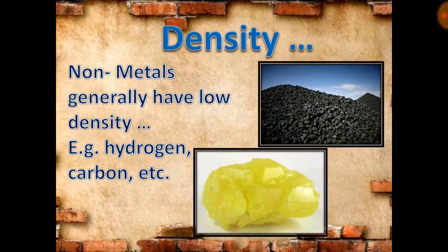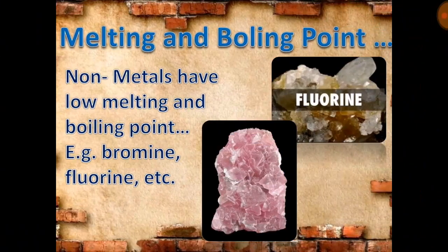Density. Non-metals generally have low density due to their loosely placed atomic structure. For example, hydrogen, carbon, etc. Melting and boiling point. Non-metals have low melting and boiling points. For example, bromine, fluorine, etc.